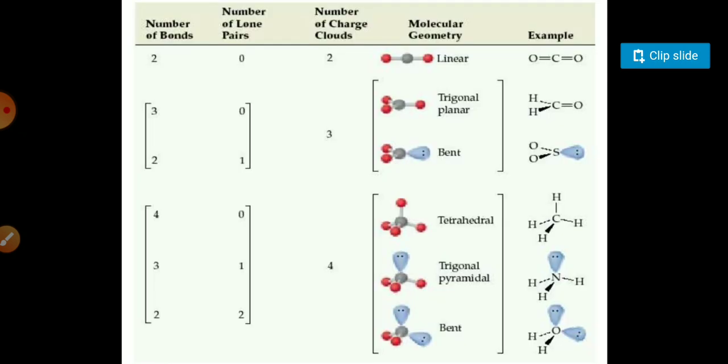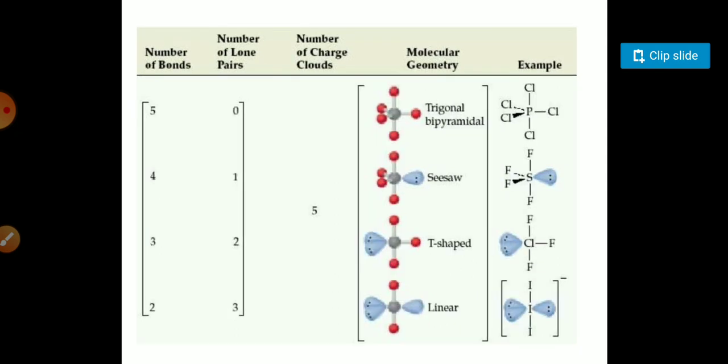Now here you can see the number of bond pairs, lone pairs, and the number of charge clouds present, and these are the geometries and these are some examples according to VSEPR theory. The bond pair of 2 has a linear geometry, the bond pair of 3 and lone pair 0 has a trigonal planar, the bond pair is 2 and the number of lone pairs present is 1 has a bent structure. So these are all the geometries present for the bond pair and lone pair combinations and the molecular geometry of these compounds.